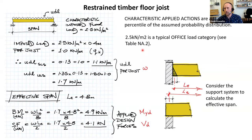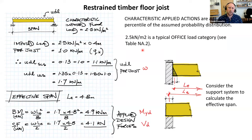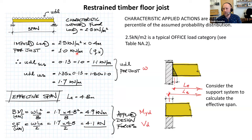We have an imposed — or variable — load (Eurocode terminology). This member is in an office, so the variable load is 2.5 kN/m². Spread across the 400 mm centres: 2.5 × 0.4 = 1.0 kN/m. So we have a permanent load of 0.13 kN/m and a variable load of 1.0 kN/m.